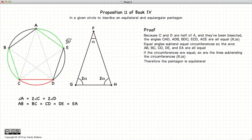Now if the circumferences are equal, so are the lines subtending the circumference. Which means that if the circumference AE is equal to the circumference AB, then the line AE is equal in length to the line AB. So now we have shown that each side of our pentagon is equal.